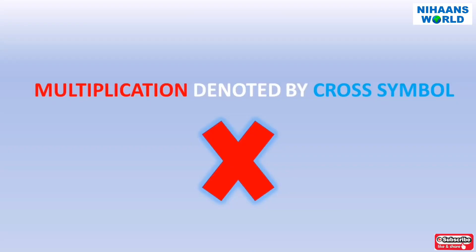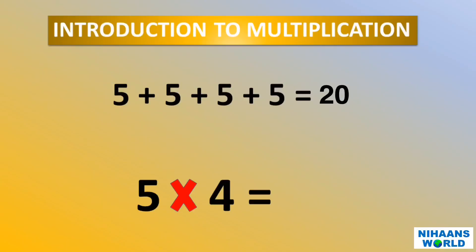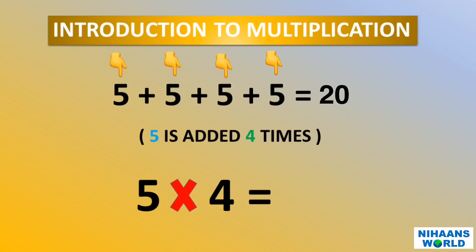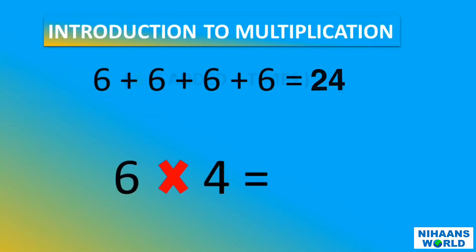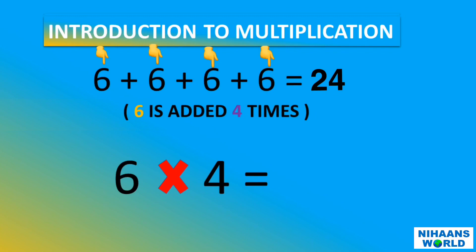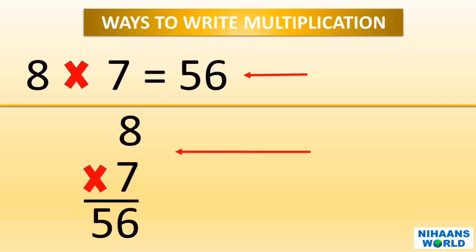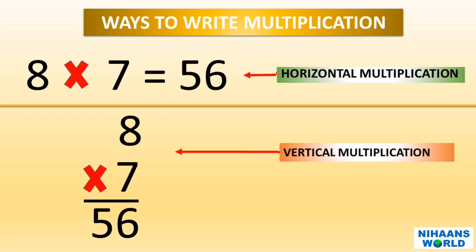Multiplication is denoted by the cross symbol. Here the number 5 is being added 4 times, so the multiplication sentence for the same will be 5 multiplied by 4 is equal to 20. Here the number 6 is being added 4 times, so the multiplication sentence for the same will be 6 multiplied by 4 is equal to 24. This is called horizontal multiplication. This is called vertical multiplication.